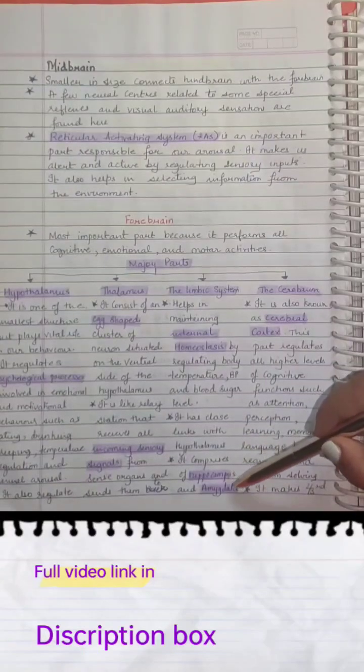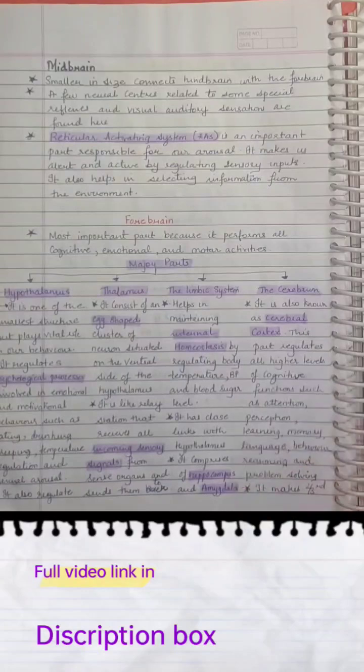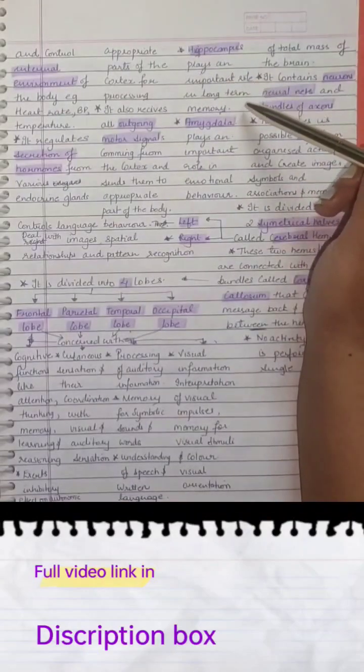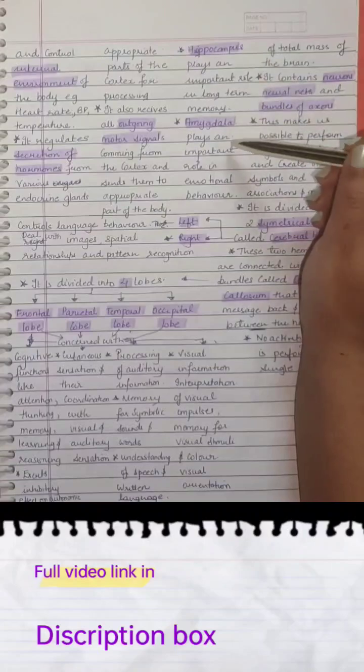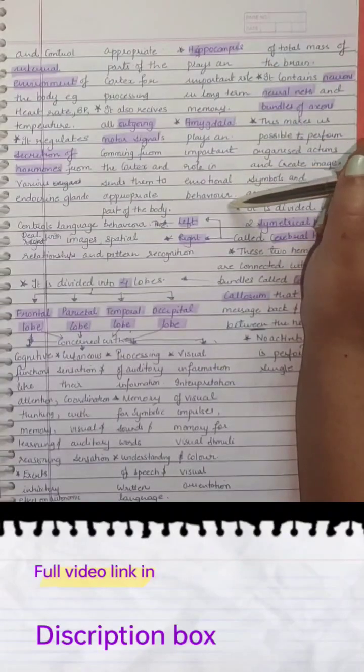It comprises the hippocampus and amygdala. The hippocampus plays an important role in long-term memory, and the amygdala plays an important role in emotional behavior.